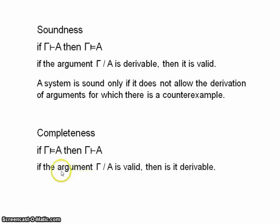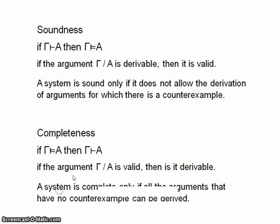So if the argument is valid, then it can be derived. So a logical system is complete only if all the arguments that are valid and if all the arguments that have no counterexample can be derived.